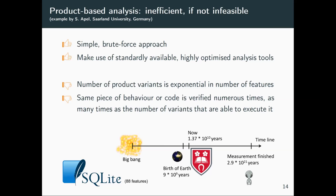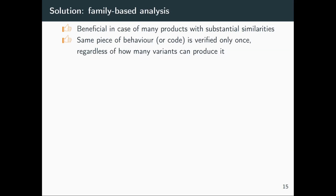SQLite, for example, has 88 features. If we were to analyze product by product, the time required would be completely unfeasible — we would not finish until the earth is occupied by aliens. The solution we consider is family-based analysis. This is beneficial when you have many products with many similarities and core features in common, so the same piece of behavior is verified only once.